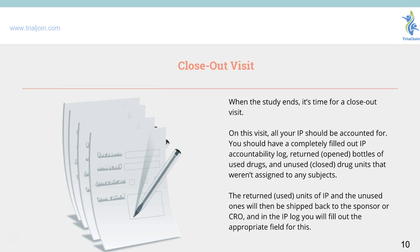When the study ends there is a closeout visit. All your investigational products should be accounted for — you should have completely filled out the accountability log and returned both used and unused investigational products that weren't assigned to any subjects. Proprietary product from the sponsor and the returned units of investigational product should be shipped back to the CRO or the sponsor, along with the logs filled out for the appropriate study.